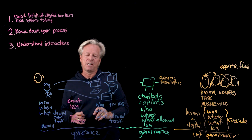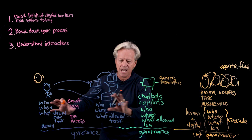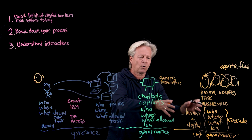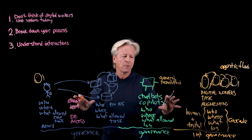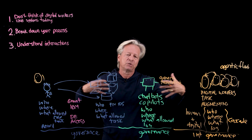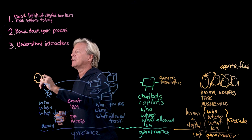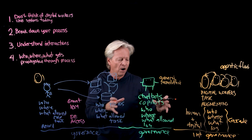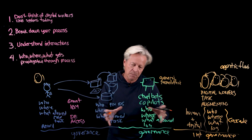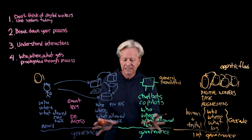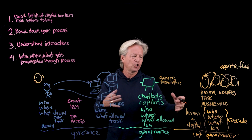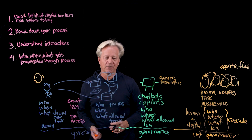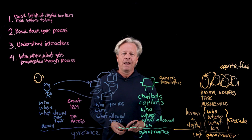Third, understand the whole ecosystem — what it means to have humans interacting with digital workers, with systems, with bots — and what all that drives from an identity perspective. Keep that in mind as you design your system. And finally, IGA — Identity Governance and Administration — becomes critical: the who, the where, the what has to be propagated, cascaded, and integrated across all of this. Our single systems of governance in the past are going to evolve, so you have to start thinking about that. I hope this helps your understanding of digital workers and where things are going.